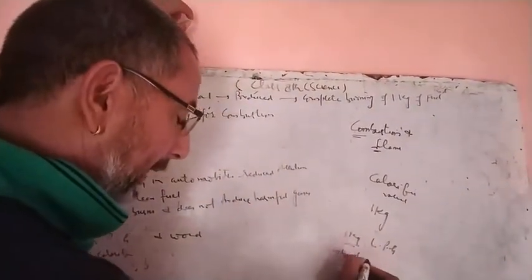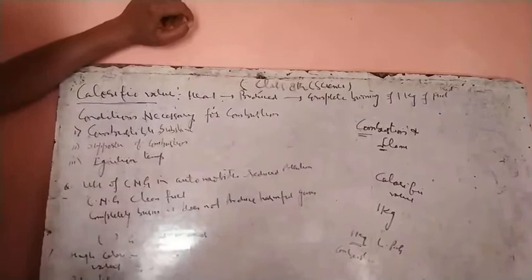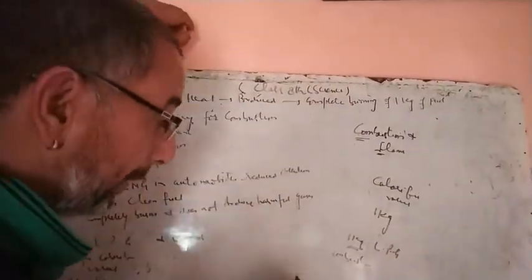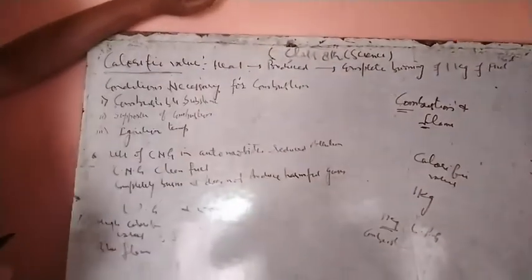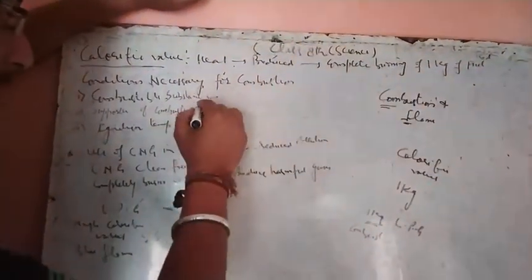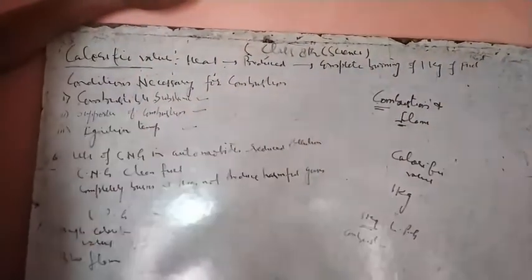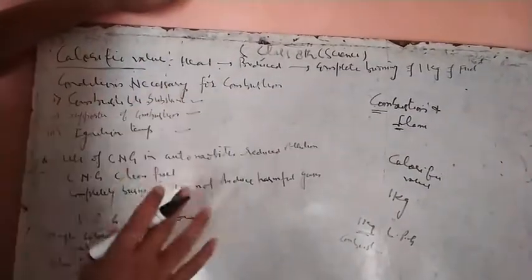For the combustion process, we need some conditions. First, you need a combustible substance. Second, you need support for combustion. Third, you need an ignition temperature at which the substance catches fire easily. That temperature is called ignition temperature.